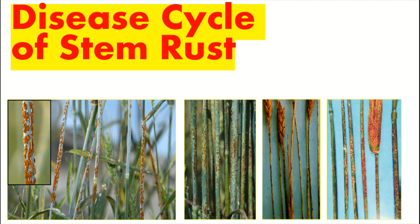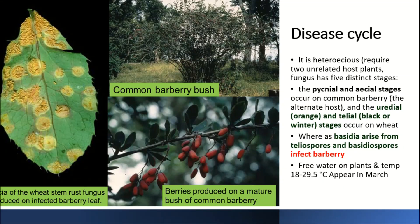The disease cycle of stem rust of wheat is a very important examination point. This pathogen is heteroecious, meaning it requires two unrelated host plants to complete different stages. The pycnial and aecial stages occur on barberry, which is the alternate host, while the uredial and telial stages occur on wheat, which is the main host.